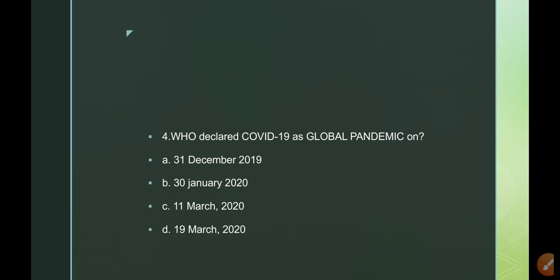Fourth question: WHO — World Health Organization — declared COVID-19 as a global pandemic on which date? Initially COVID-19 was not declared a pandemic; it was declared only a public health emergency of international concern. After months, it was finally declared a pandemic.